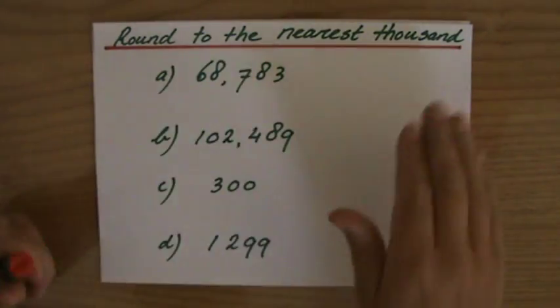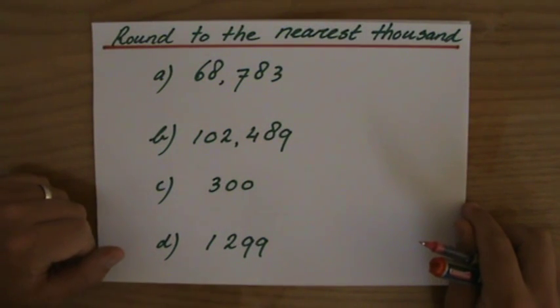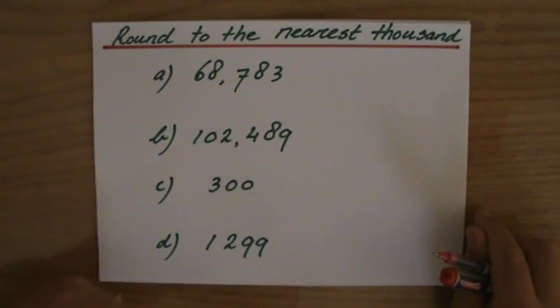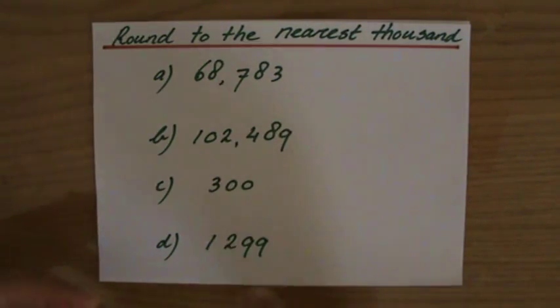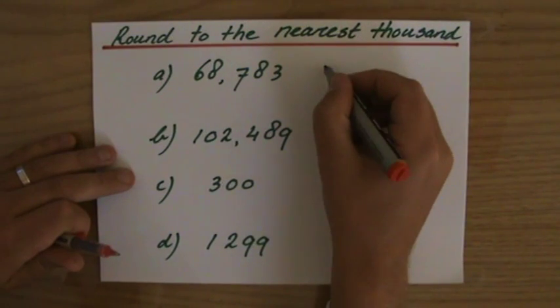Welcome back. We are rounding to the nearest thousand and I'm gonna rush a little bit because we've been rounding to the nearest tens, we've been rounding to the nearest hundreds, and now to the nearest thousand. It's all been explained, so let's do it a little bit quickly.